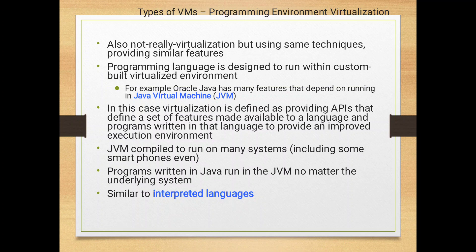Another approach is programming language virtual machines, designed to run within a custom-built virtualization environment, with Java Virtual Machine (JVM) as an example. Here virtualization is defined by providing an API — the application programming interface — as an essential set of features made available through the language, improving the execution environment. The JVM is compiled to run on many systems, so a program written in Java runs in the JVM regardless of the underlying system, similar to an interpreted language.